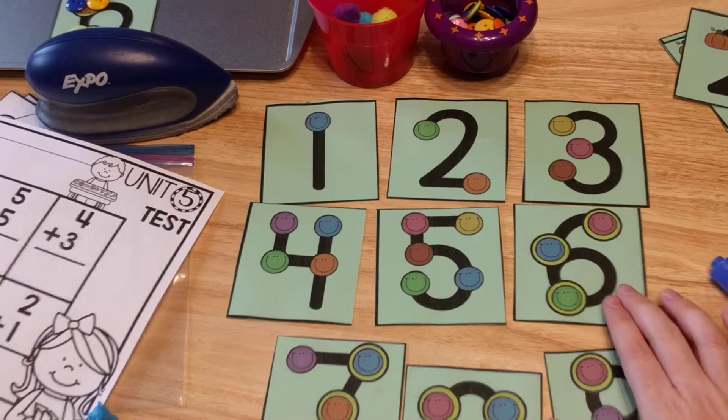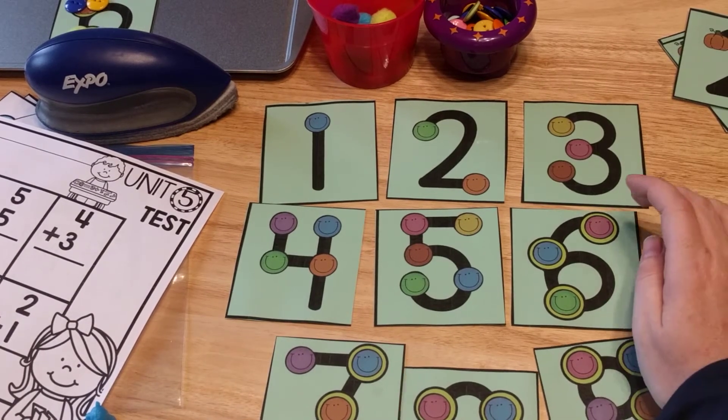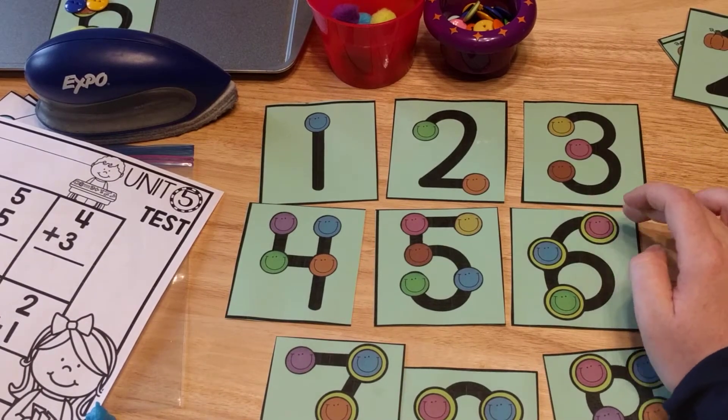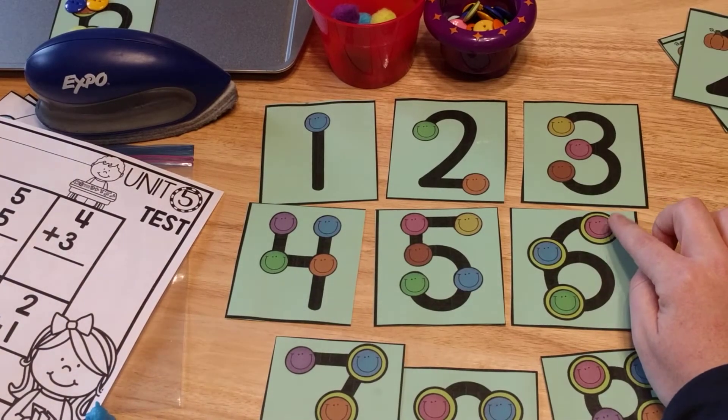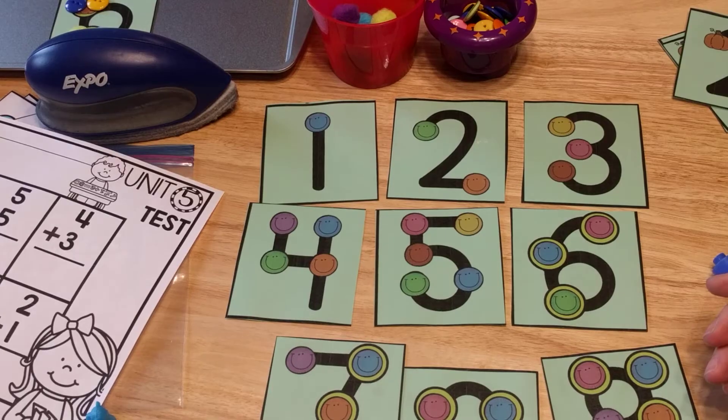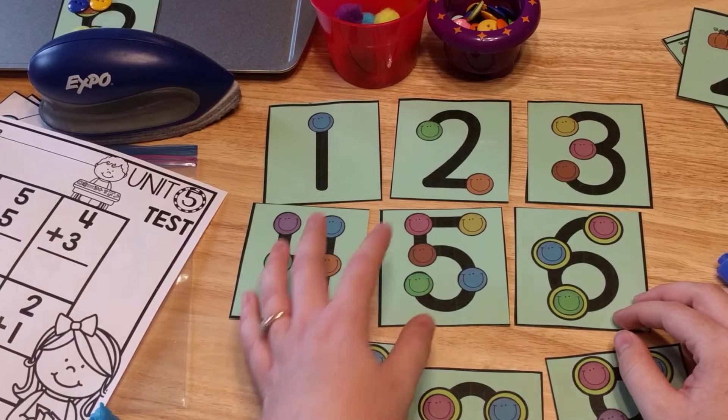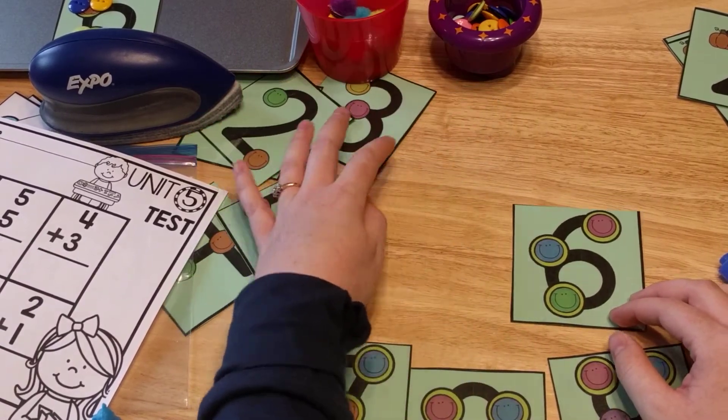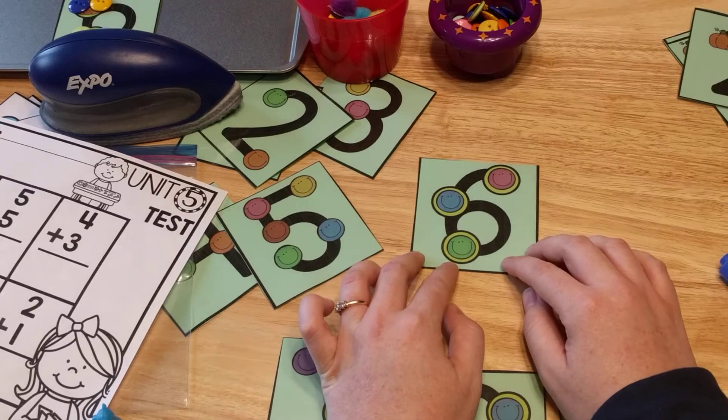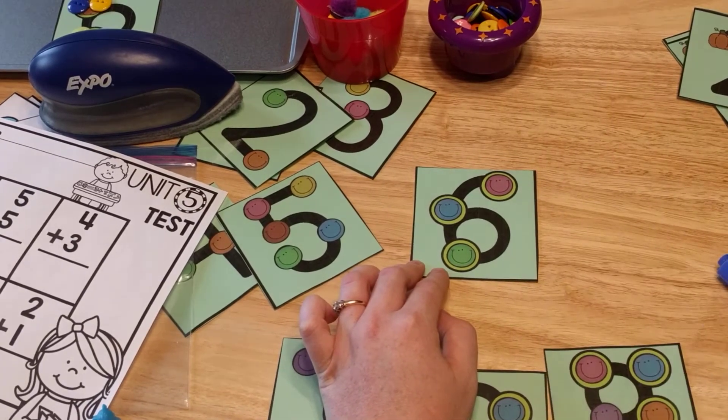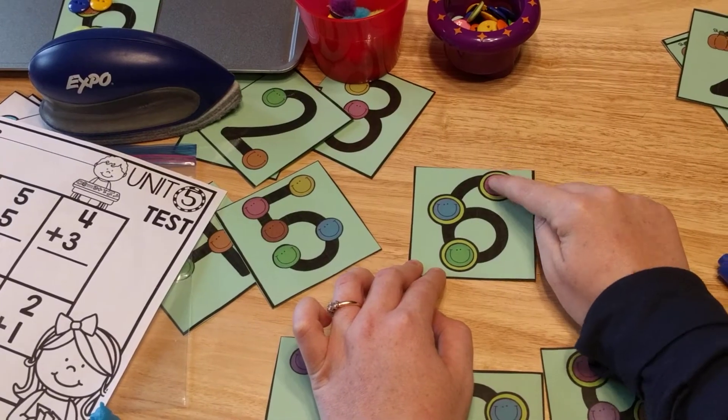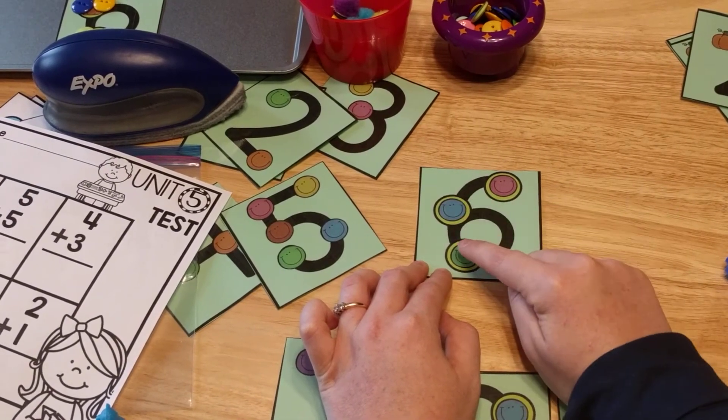Then when you get to bigger numbers like the number six, you can see that there's a circle around each one of the circles. So there's basically two circles. Now I did mine as little smiley faces, but it's generally a circle. And let me move these cards so you can see. And this one, since there's a circle around it, that means to touch it twice. So the kids are going to go one, two, three, four, five, six.